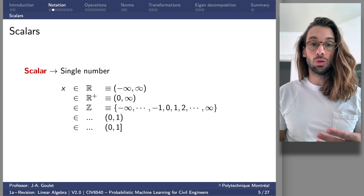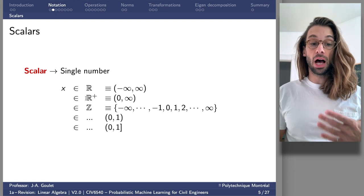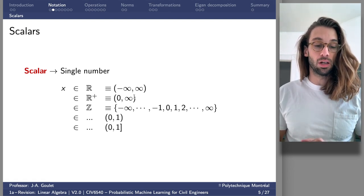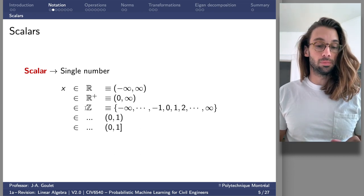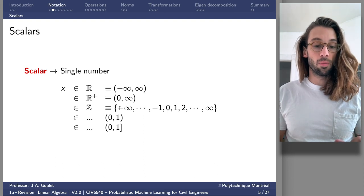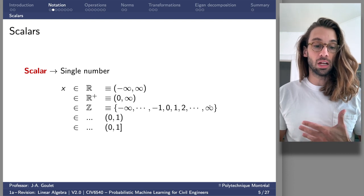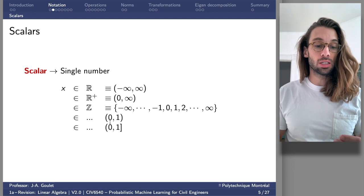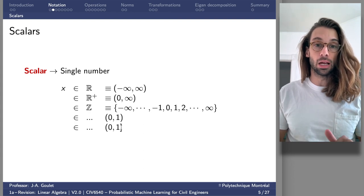It could be belonging to the real positive space, so from the interval between zero and plus infinity. It could be the integer space, from the set of possible integers between minus infinity and plus infinity. Or it could be any other interval or subset of values — for instance, the interval between zero and one, including or excluding the endpoints.